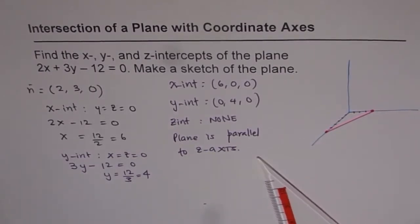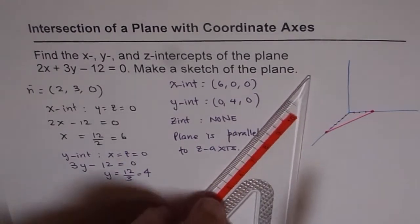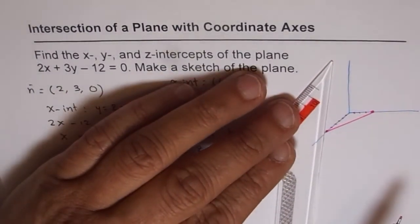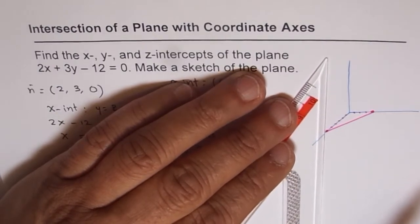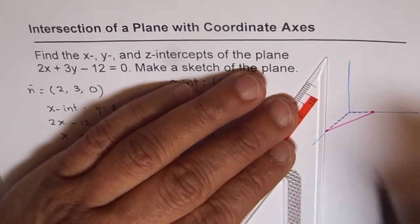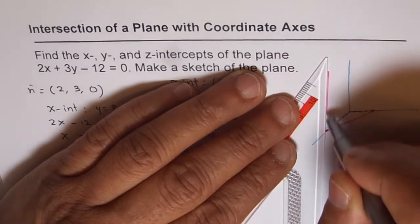Now as we notice, since we do not have any normal component in z-direction, the plane should be parallel to z-axis. So we can draw this plane with lines parallel to z-axis as I am trying to do now. So that becomes the plane for us.